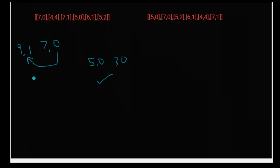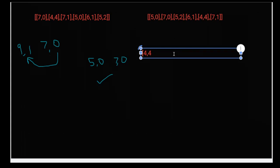Now for the observation: let's take all the elements and arrange them by height first. The smallest height is four, then five, then five again — so there's ambiguity between two fives — then six, then seven. This is the arrangement if we sort purely by height.